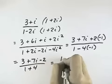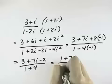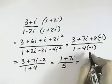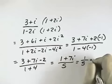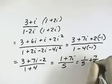So we get 3 minus 2 is 1 plus 7i over 5. But to write this in the appropriate form for a complex number, we'd split up the real part, which is 1 fifth, and the imaginary part, which is 7 fifths i.